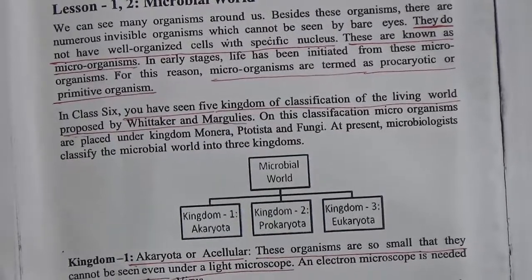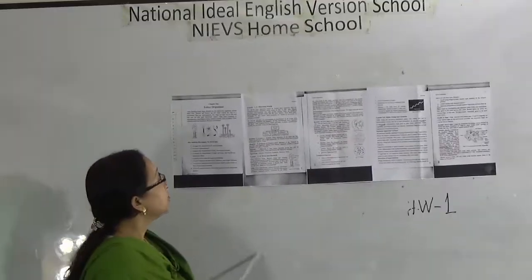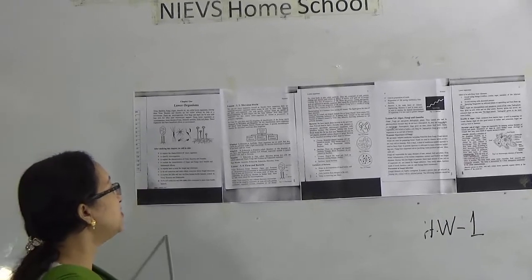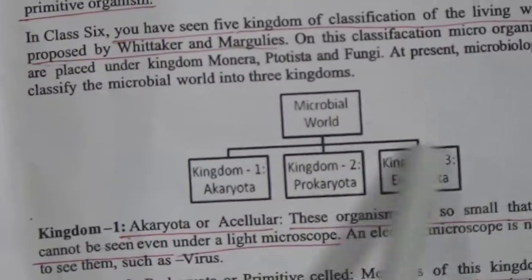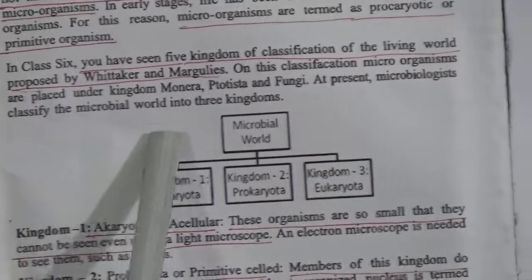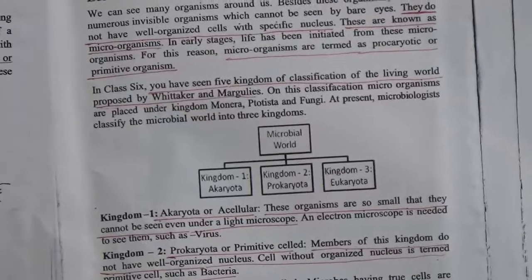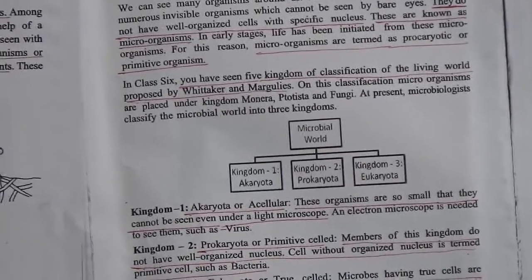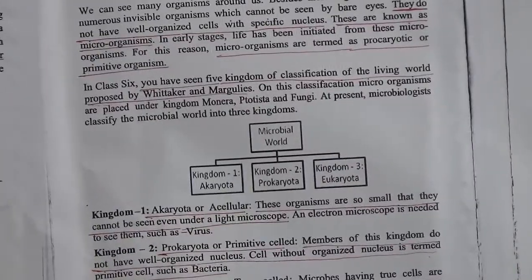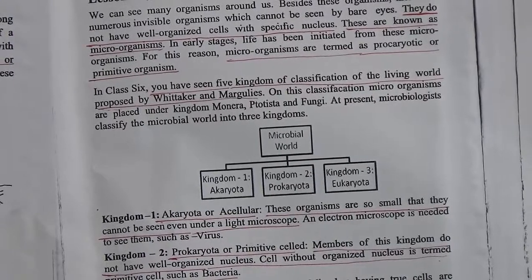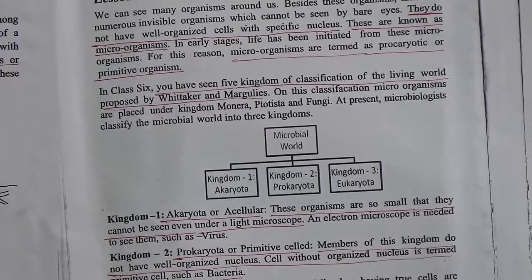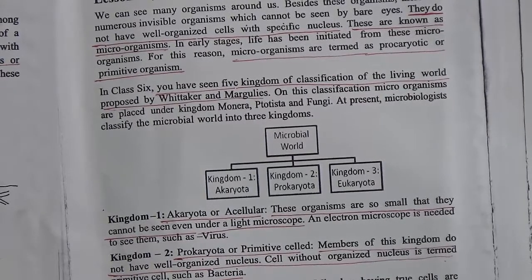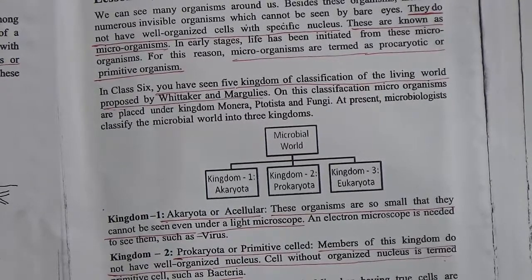At present, microbiologists classify the microbial world into three kingdoms. The names of these kingdoms are: kingdom number one — Acariota; kingdom number two — Prokaryota; and kingdom number three — Eukaryota.